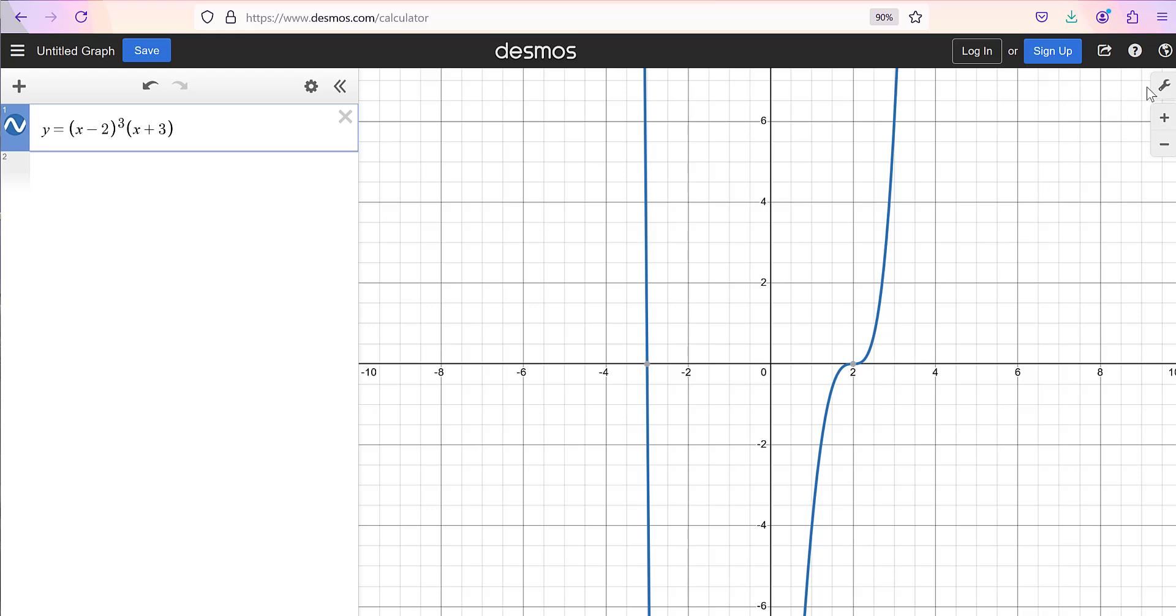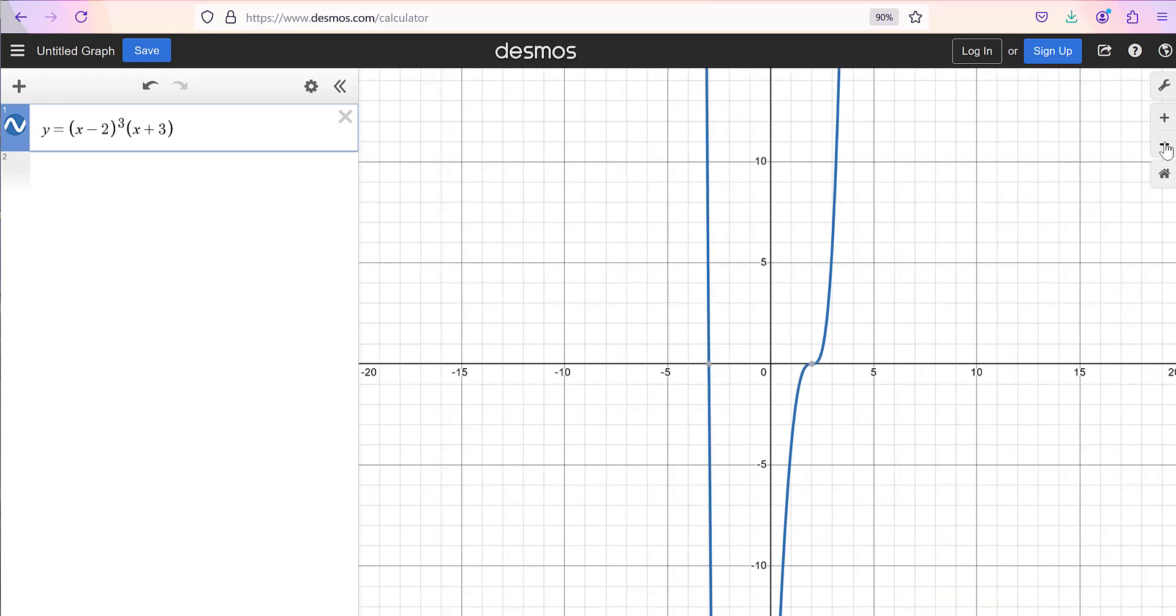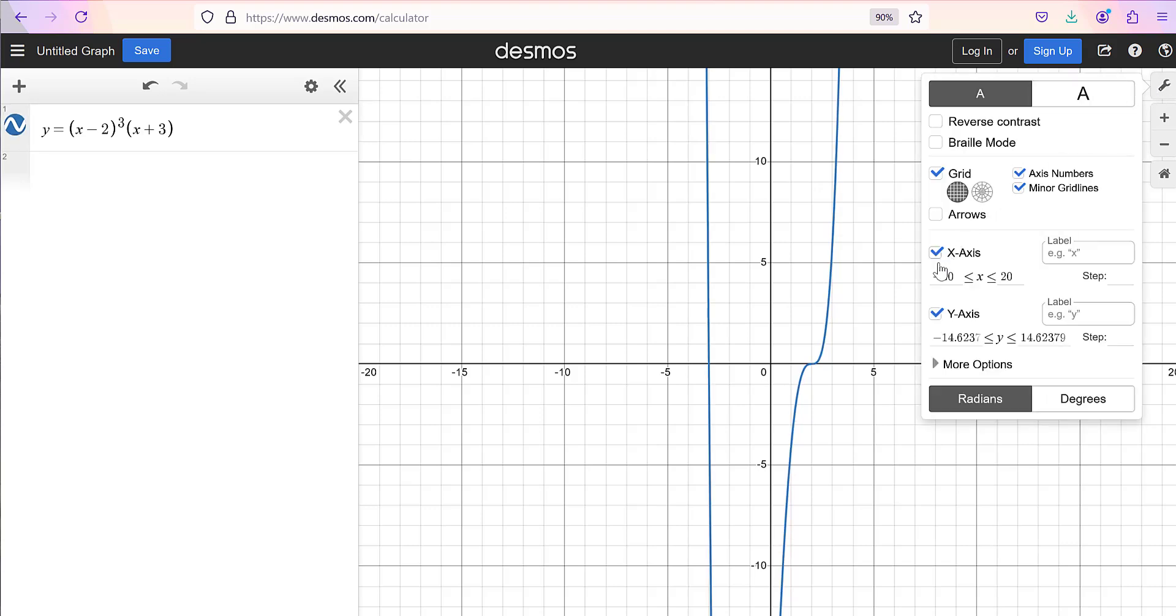So what I'm going to do here is I'm going to go over to the wrench icon and adjust the graph settings. Now I could have just hit the zoom out button and that might be helpful, but the wrench icon will help us get a better visualization of the graph.